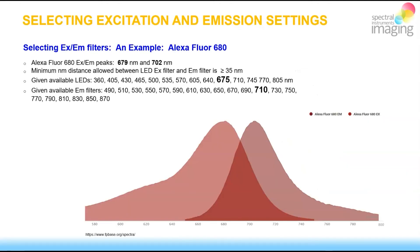Here are the absorption and emission spectra of a very popular fluorophore, Alexa Fluor 680. You can see that it has absorption and emission maxima at 680 nanometer and 704 nanometer respectively, which amounts to a 24 nanometer Stokes shift — typical.